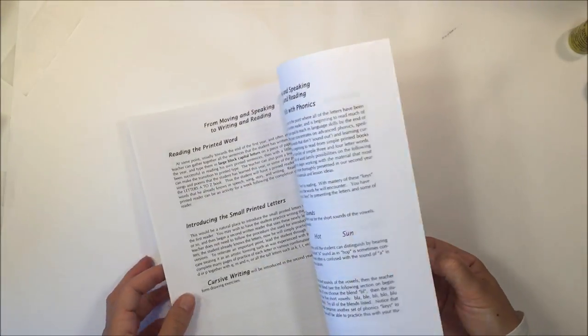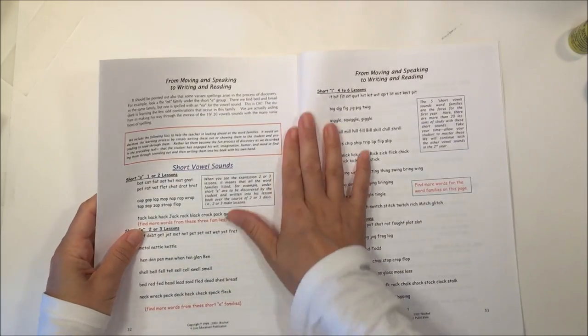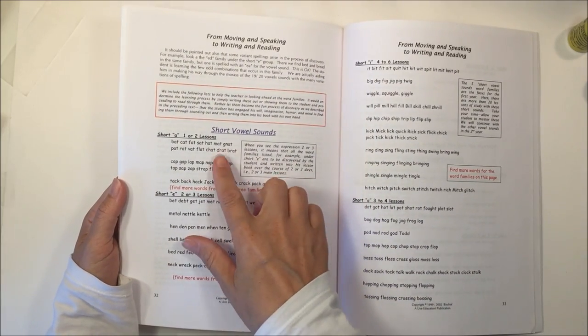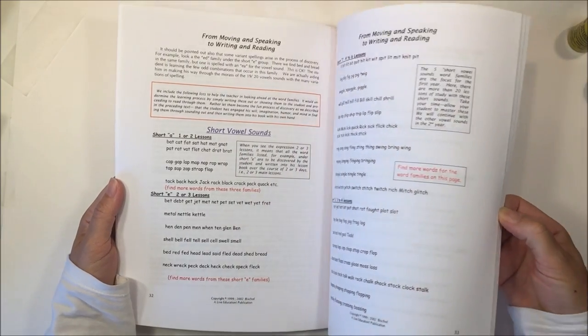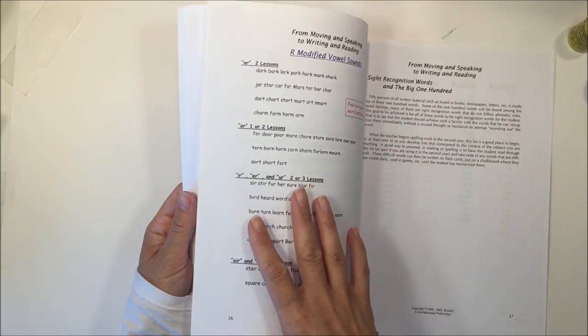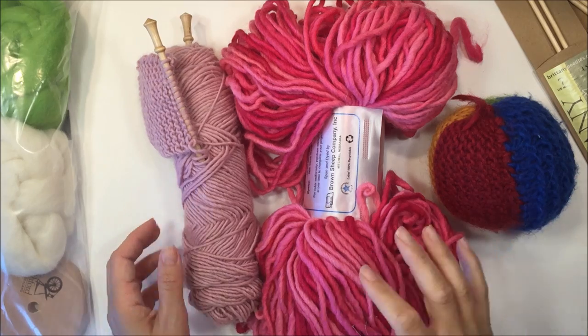Later on in the lesson, then it goes into some of the other things that you would typically find in a first grade curriculum. That's the short vowel sounds and the long vowel sounds. It doesn't go through too many different rules. They're really simple in the beginning.